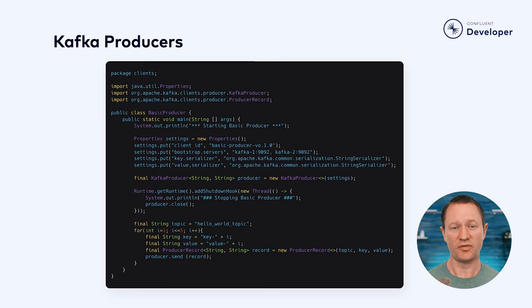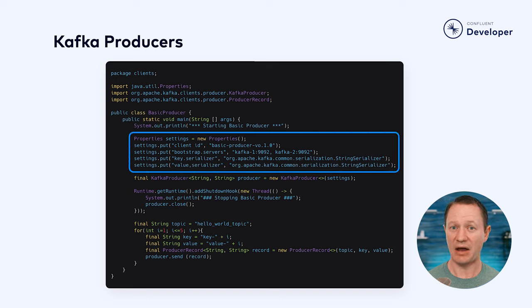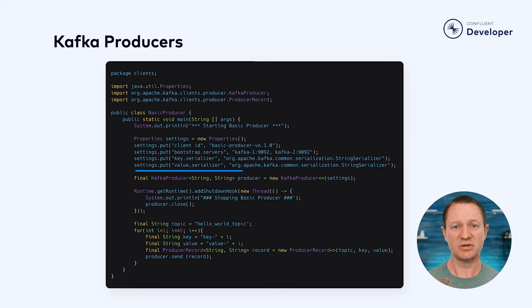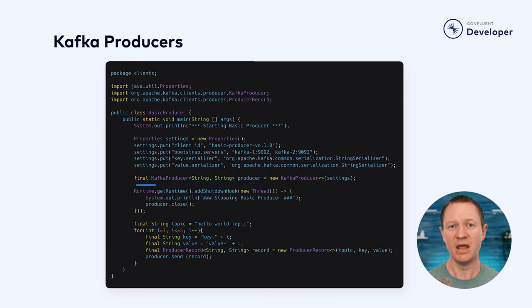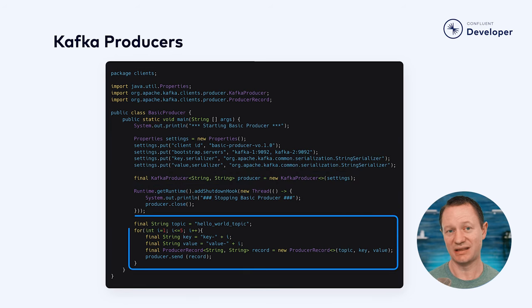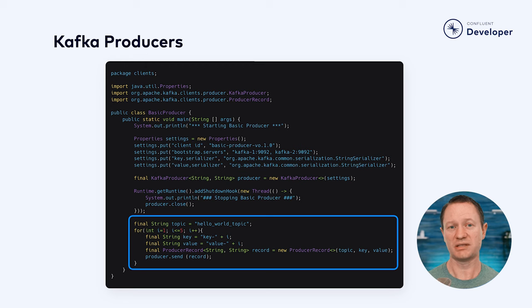There are four main code sections in a producer. First, we specify some configuration details — things like how to connect to the Kafka cluster and the type of the key and the value. Next, we create a producer by invoking the Kafka producer class. We then create the shutdown behavior, and last of all, we actually send the data. Here you create an instance of the producer record class and provide the topic, the key, and the value for your messages.